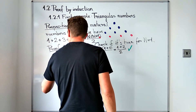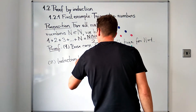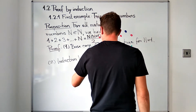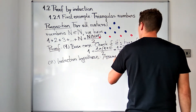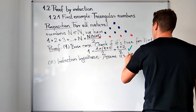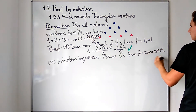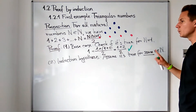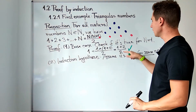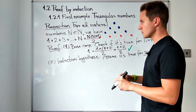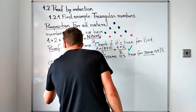For our next step we make the induction hypothesis, which means we assume that the statement is true for some natural number n. We are assuming it to be true for some n without specifying which one. We know there is already one number for which it is true, so it's not an empty statement. We assume this and then move to the induction step.